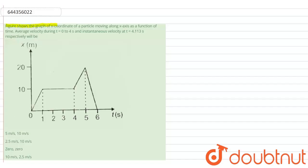Figure shows the graph of x-coordinate of a particle moving along x-axis as a function of time. Average velocity during t equal to 0 to 4 seconds and instantaneous velocity at t equal to 4.113 seconds respectively will be. So we have to find average velocity during t equal to 0 to 4 seconds and another one is the instantaneous velocity at t equal to 4.113 seconds.